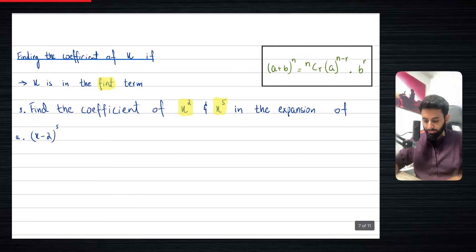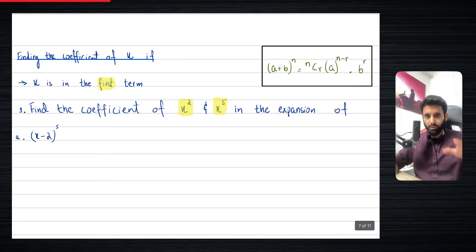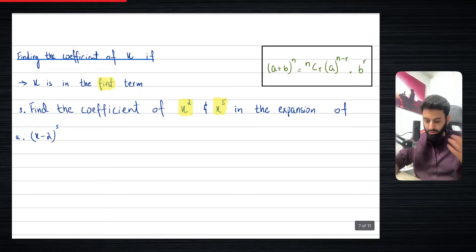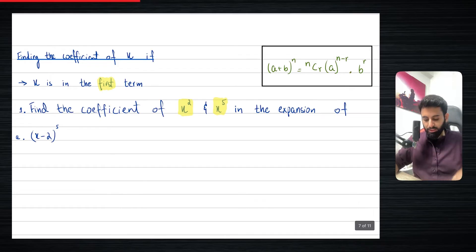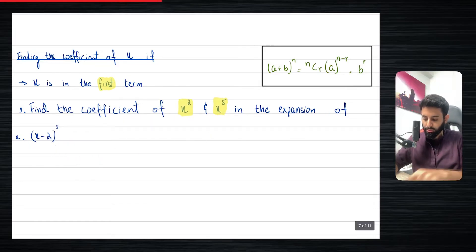In the exam or test, you will have a binomial theorem and you will be asked to find just a particular coefficient of x — it could be a coefficient of x squared, coefficient of x cubed, x to the power 5. So let's look at this example. It says: find the coefficient of x squared and x to the power 5 in the expansion of (x minus 2) to the power 5.